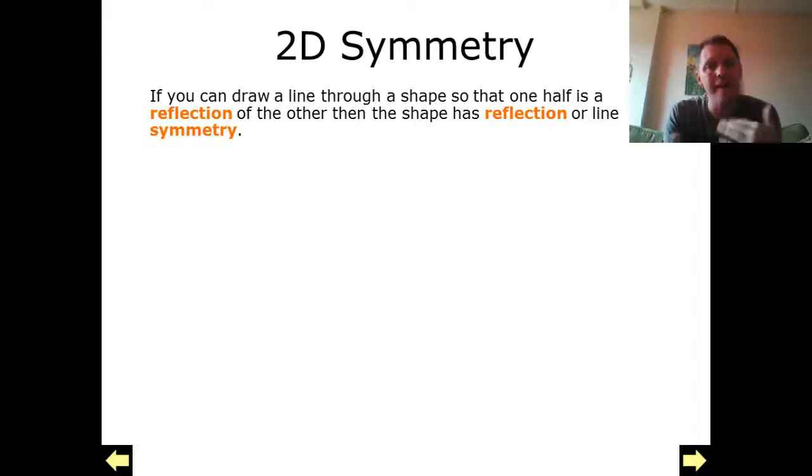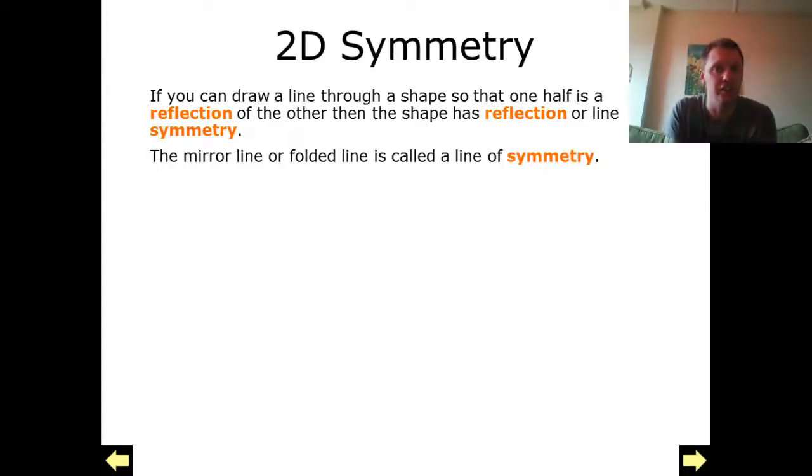When we're looking at 2D symmetry, what we're actually looking for are reflections through a line which is going straight through the center of the shape.